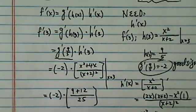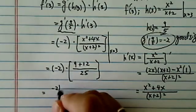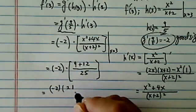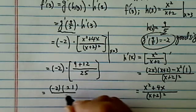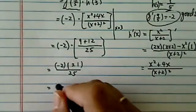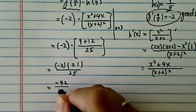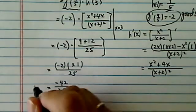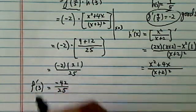So we have two more steps. Minus 2, this is 21 over 25. So the final answer that we're looking for is equal to minus 42 over 25, and this is f prime of 3.